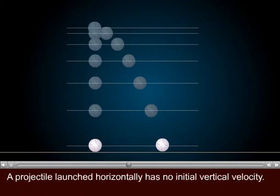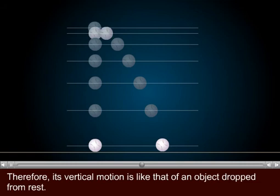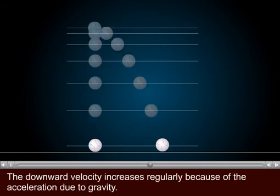A projectile launched horizontally has no initial vertical velocity. Therefore, its vertical motion is like that of an object dropped from rest. The downward velocity increases regularly because of the acceleration due to gravity.